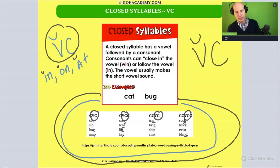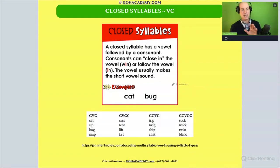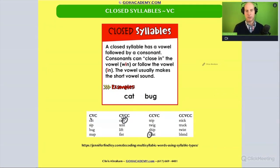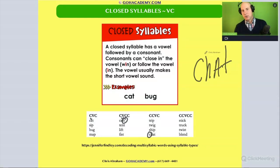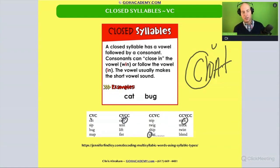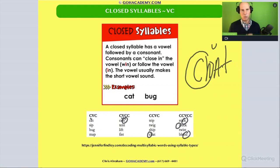A student could be struggling with closed syllable words and their issue might not be the short vowel — they might already know the vowel is short. Their issue might be with the blend or the digraph. For example, in the word 'chat,' if they knew that this was a short A, you wouldn't make a big deal of them having difficulty with closed syllable words. Maybe they're having difficulty with the consonant digraph at the beginning. So we want to recognize that all these closed syllable words can have digraphs and blends at the beginning or end. You want to be able to spot what part of those single syllable closed syllable words the student is having difficulty with.